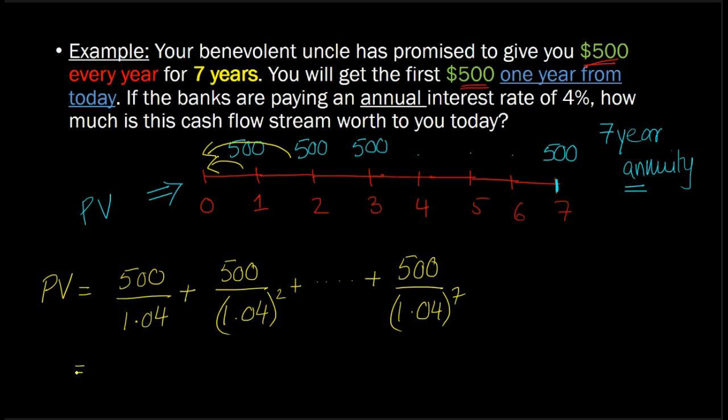Now, you can write this more simply as 500, which is the common factor, getting multiplied by 1 over 1.04 plus 1 over 1.04 squared plus, and as you can see, this will go on to 1 over 1.04 raised to the power 7.